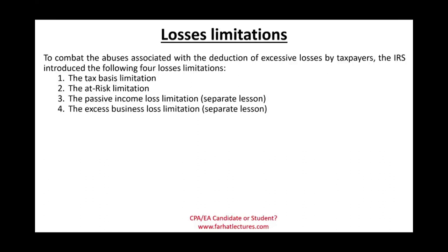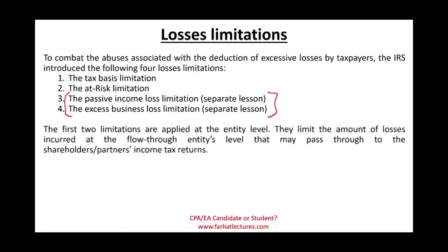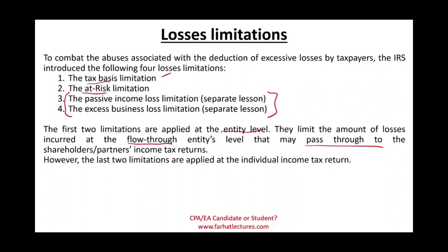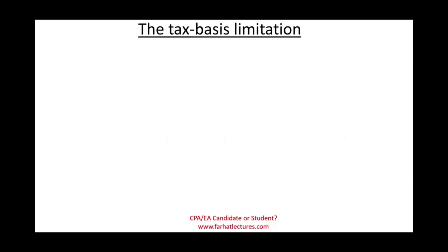The passive income loss limitation and the excess business loss limitation apply to the individual level and are covered in separate sessions. The first two limitations — tax basis and at-risk limitation — are applied at the entity level. They limit the amount of losses incurred at the flow-through entity that may pass through to the shareholder. Simply put, you can deduct losses up to your tax basis and up to your at-risk amount.